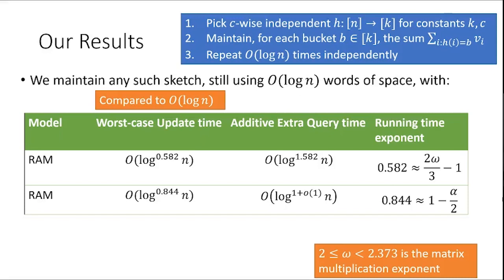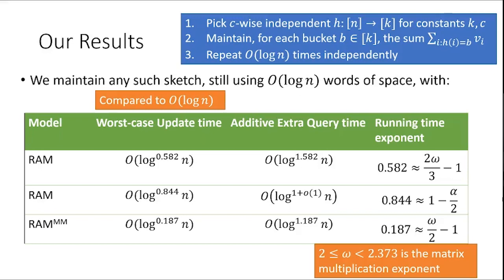We have one more result in a slightly different model — the word RAM with matrix multiplication model — where we get an even faster update and query time. Alpha is the dual exponent of matrix multiplication: the largest number such that you can multiply an n × n^α matrix with an n^α × n matrix in roughly n² time. Our best known value is about 0.3. In this model, we get down to update time of log^0.2 n.